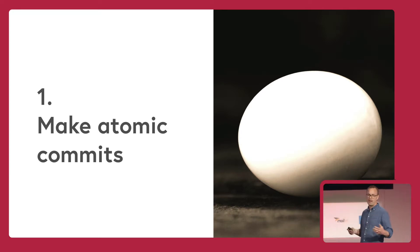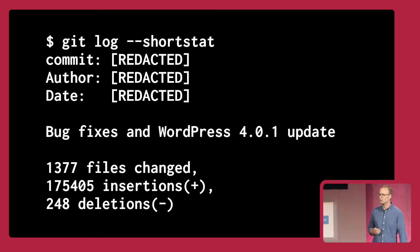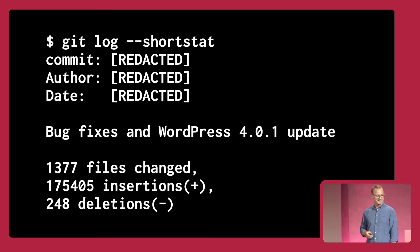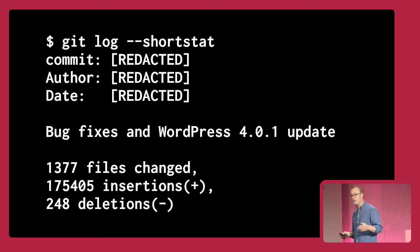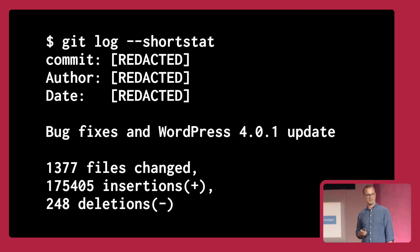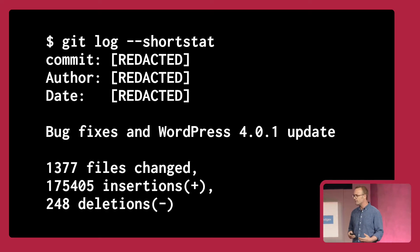Make your commits about a single change. To illustrate the importance of this, I'm going to share a Git horror story with you — and this is for a project that I am responsible for. Bug fixes? Which ones? How many? We have no idea. And a WordPress 4.0.1 update. Those of you who are laughing are probably laughing because there are 175,000 lines of code changed in this commit. Reverse engineering this commit to find out what happened is really hard.